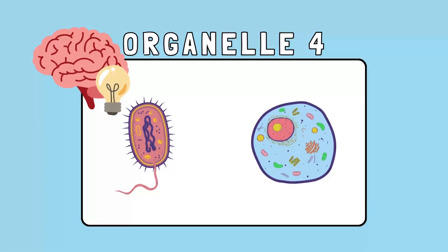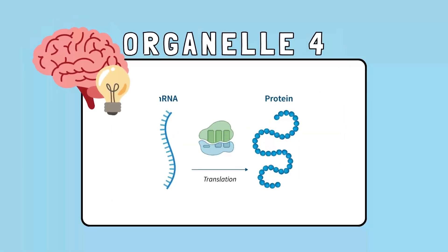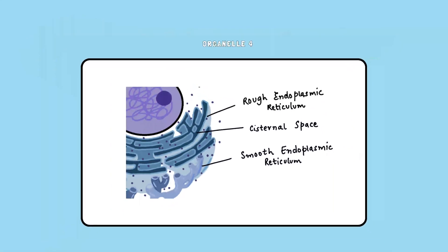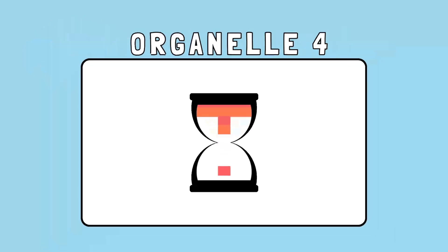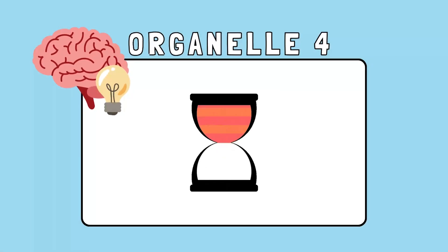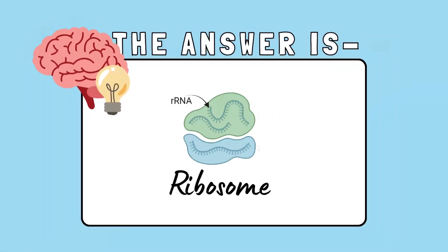Found in both prokaryotic and eukaryotic cells, this structure is responsible for protein synthesis. It often floats in the cytoplasm or attaches to the rough endoplasmic reticulum. If you guessed ribosome, you are correct! Proteins are the building blocks of life, and this is the cell's protein factory.